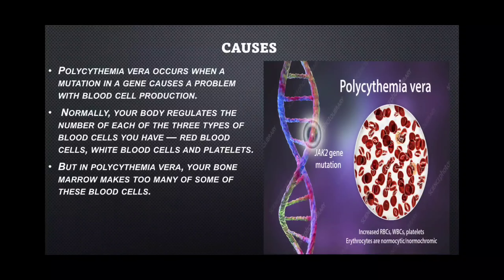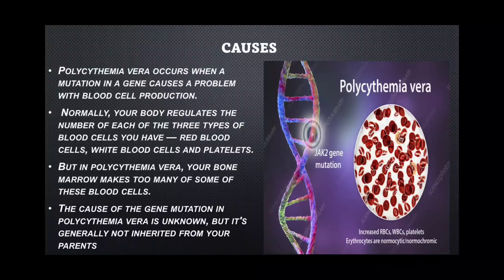In polycythemia vera, the bone marrow produces too many of these blood cells. The cause of the genetic mutation in polycythemia vera is still unknown, but it is generally not inherited from parents. It is not a hereditary type of mutation but can be due to external factors such as radiation, certain drugs, smoking, or many other factors — though the exact cause of this mutation remains unknown.